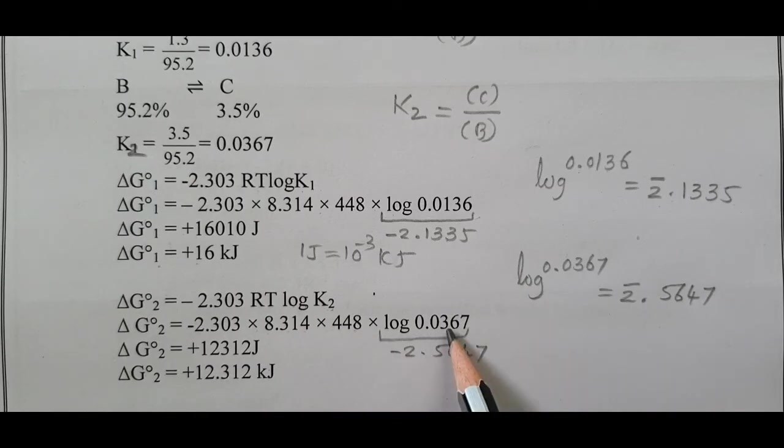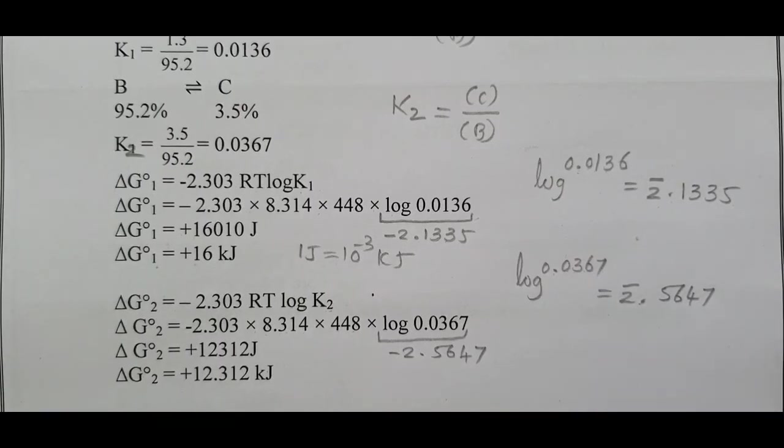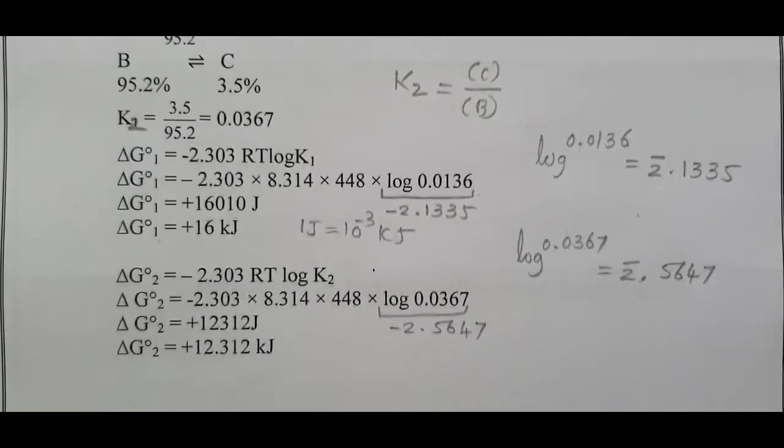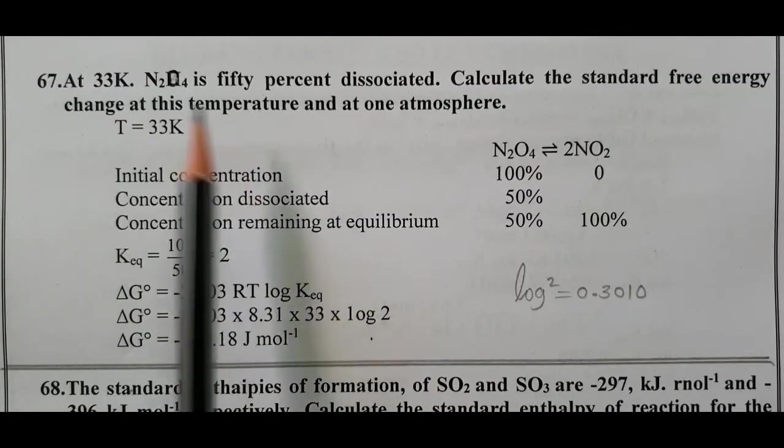Similarly, ΔG°₂ = -2.303 RT log K₂ = -2.303 × 8.314 × 448 × log 0.0367. Log 0.0367 = -1.4354. Calculating this gives ΔG°₂ = +12310 J, which equals +12.3 kJ, approximately +12 kJ. This is ΔG°₁ and ΔG°₂.